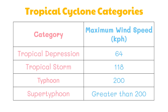Here are the tropical cyclone categories so we will know when it's called a tropical depression, tropical storm, typhoon, or super typhoon. The stronger the tropical cyclone, the higher the category; the weaker it is, the lower the category. In a tropical depression there will be maximum wind speed of 64 kilometers per hour. In a tropical storm, maximum wind speed of up to 118 kilometers per hour. It will be categorized as a typhoon as it reaches a maximum wind speed of 200 kilometers per hour. If the typhoon further intensifies it will be called a super typhoon, just like Typhoon Yolanda.